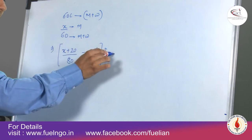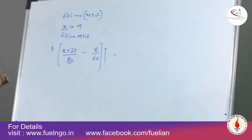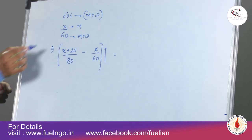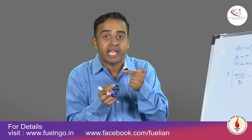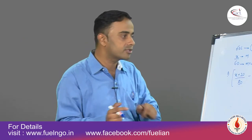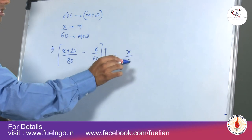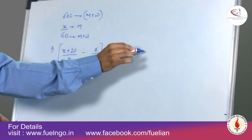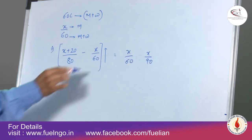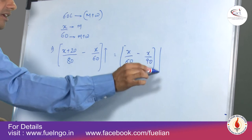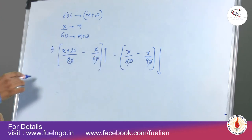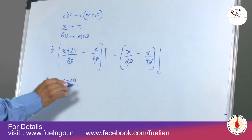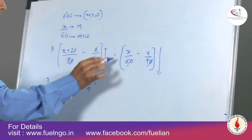Adding 30 litres of water to the same solution means diluting it. The milk x remains as it is, but now it's x out of 90. This difference tells me the decrease in concentration. Setting up the equation: (x+20)/80 − x/60 = x/60 − x/90. Simplifying, 9x + 180 + 8x over 72 equals x over 3, so x equals 180 by 7.